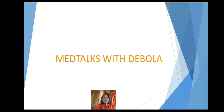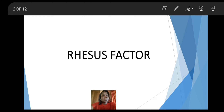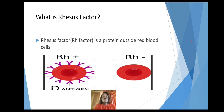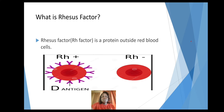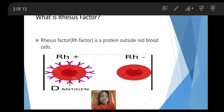Now, this brings us to today's topic: Rhesus factor. Rhesus factor, simply put, is a protein on the outside of red blood cells. I have two images here.